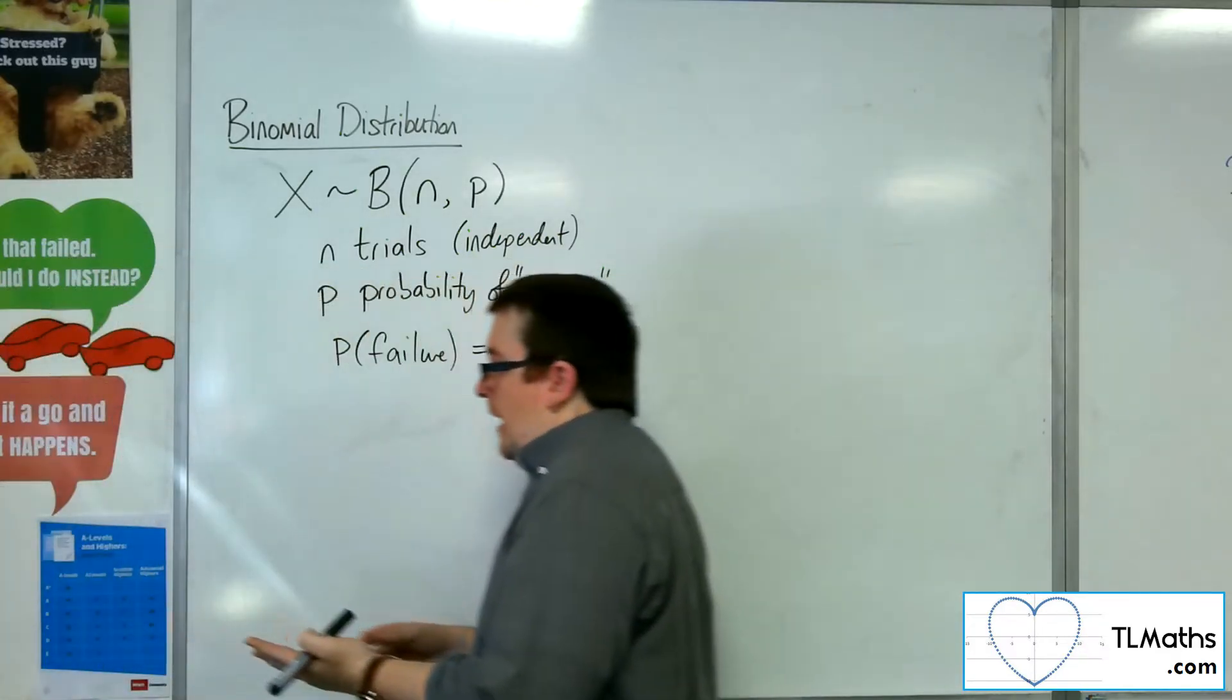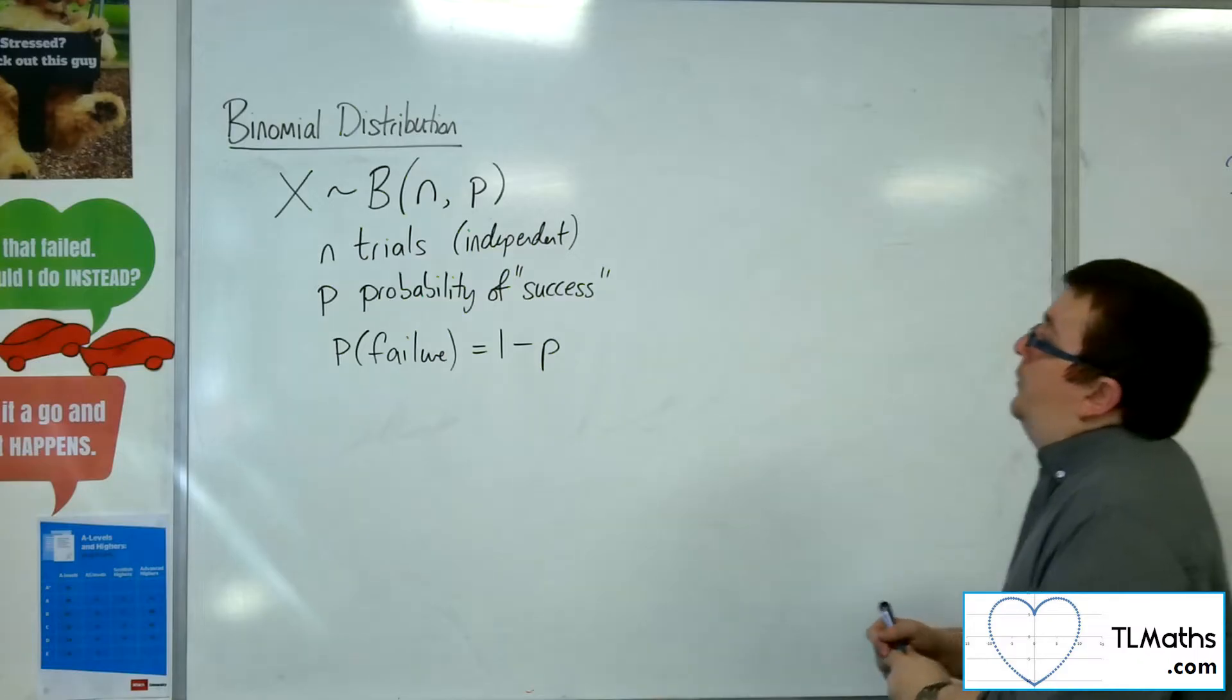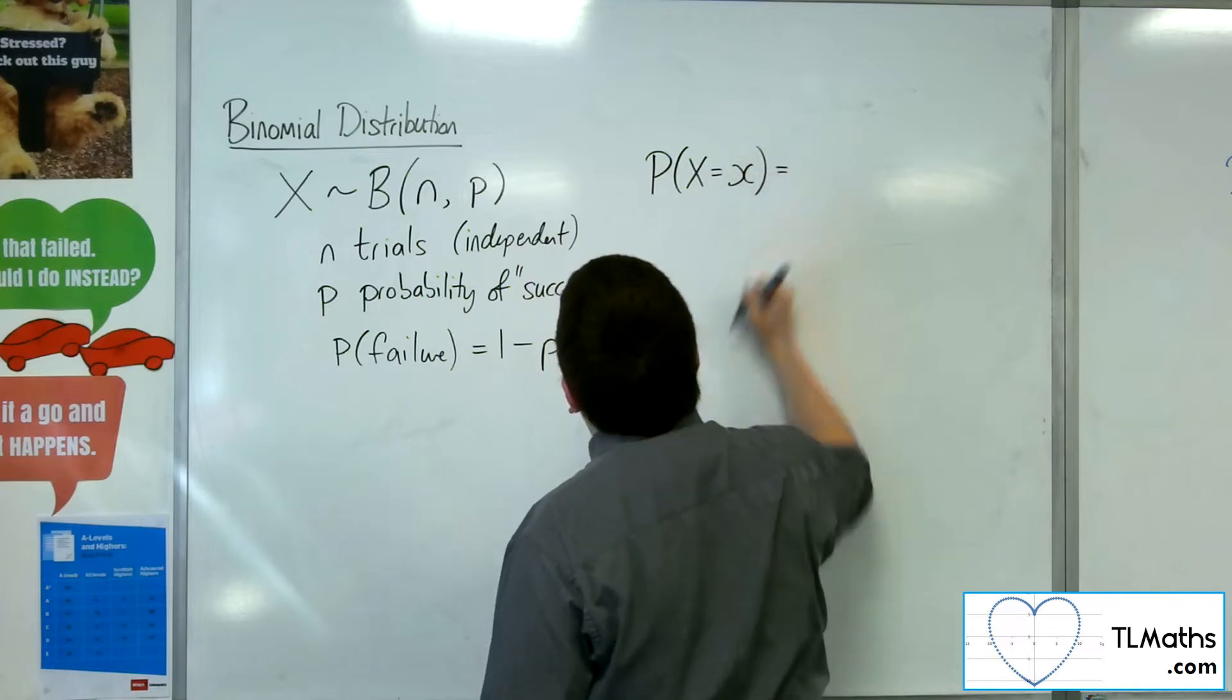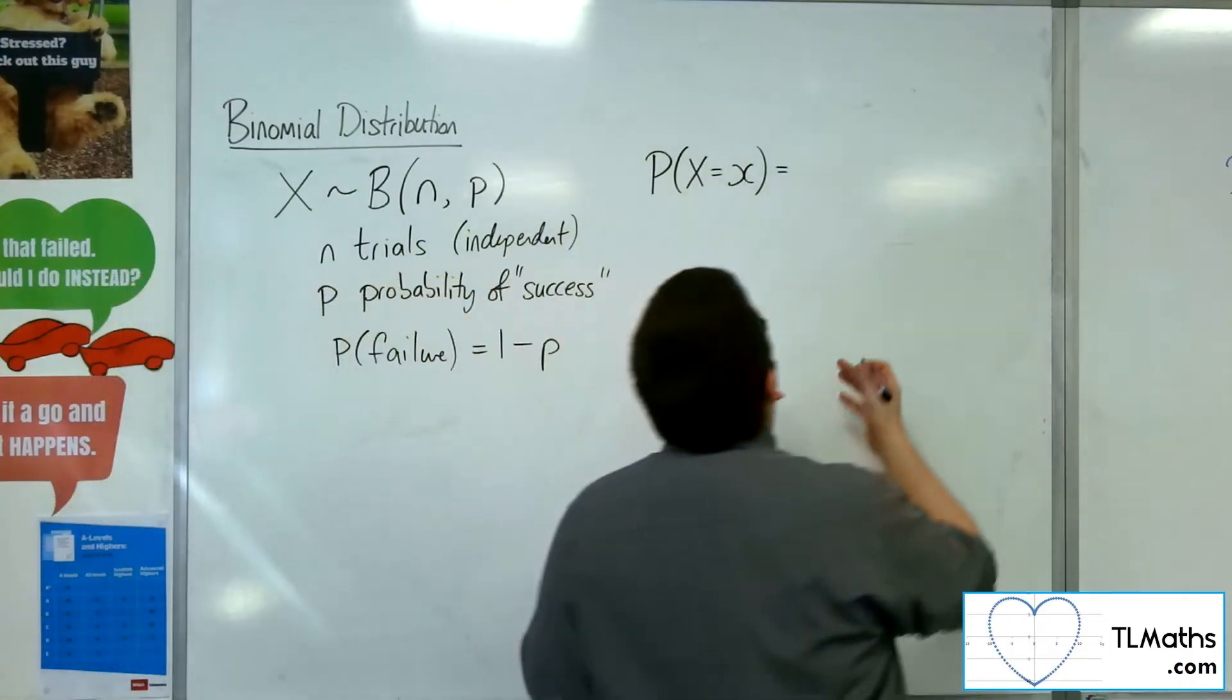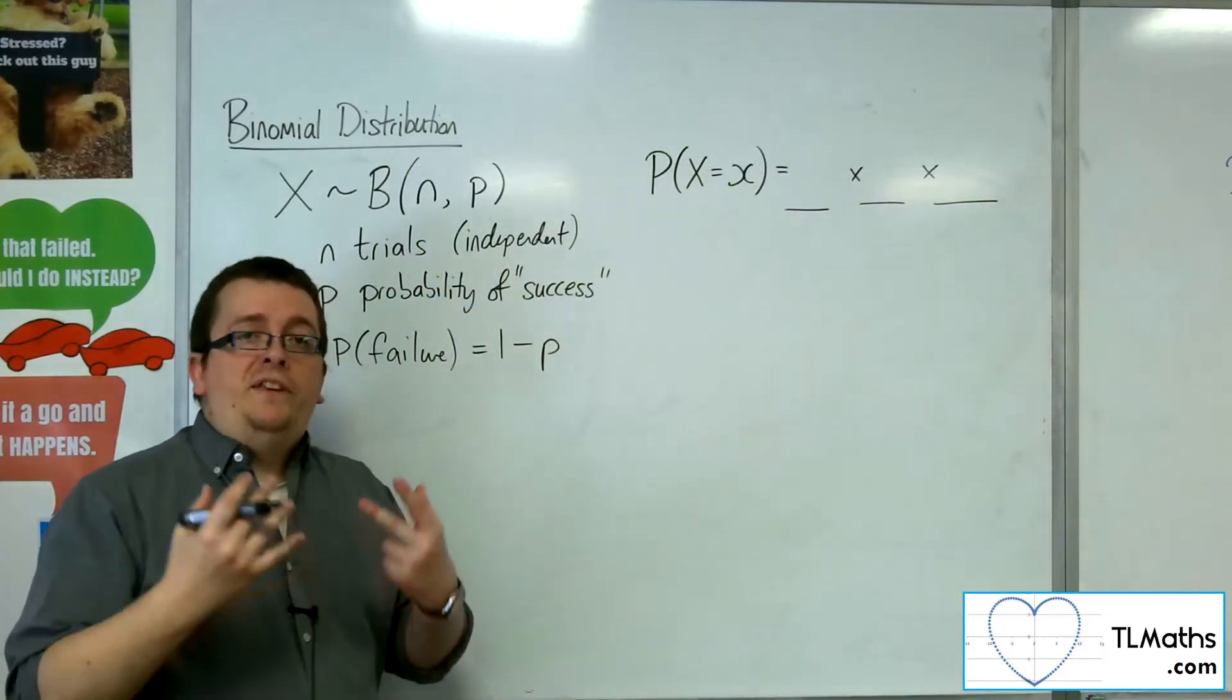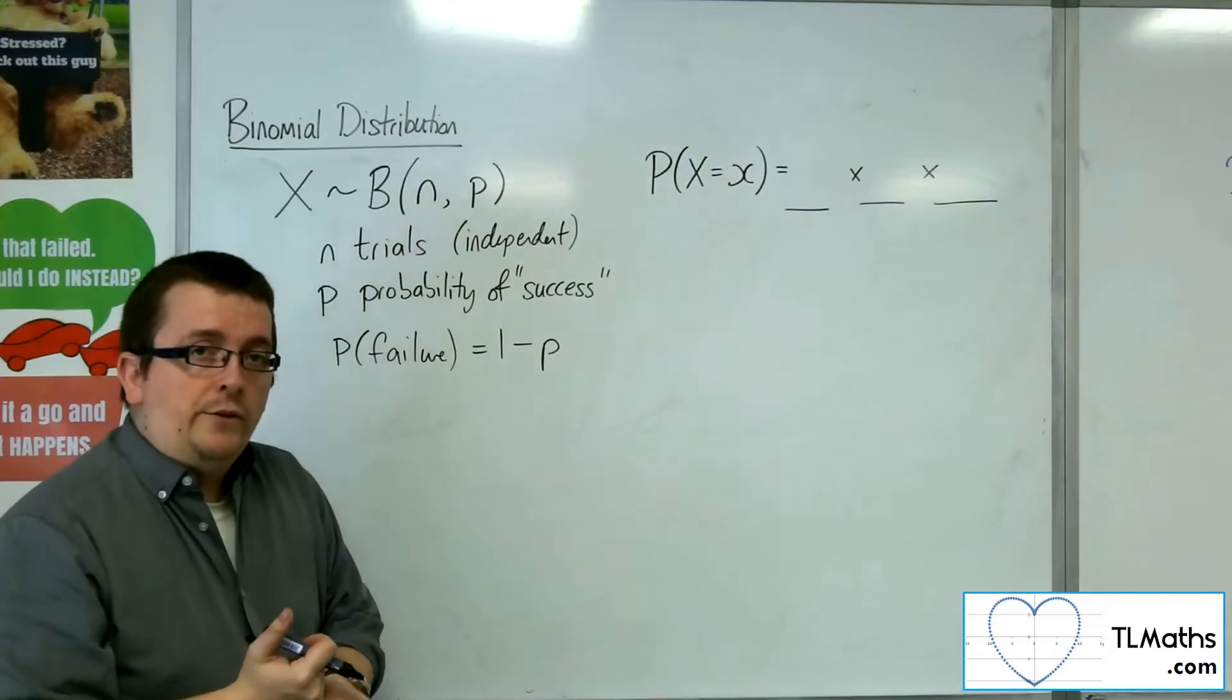So that's got to be very clear. So what we then found from that is that the probability of X being a certain value was split up into three sections. Now, if you've looked at binomial expansion, then you'll be used to seeing these three sections.